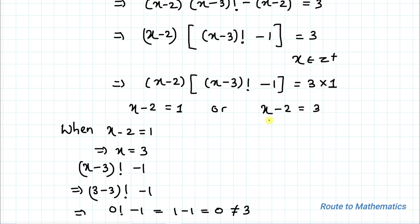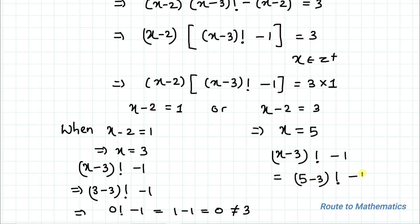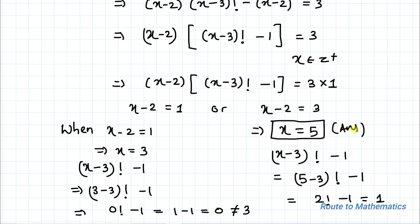When x minus 2 equals 3, the other factor must equal 1, giving x equals 5. Substituting into (x minus 3) factorial minus 1 gives 2 factorial minus 1, which equals 2 minus 1 equals 1. This satisfies the equation, so x equals 5 is our answer. I hope you understood the solution — thanks for watching, please subscribe and hit the like button for more such interesting videos.